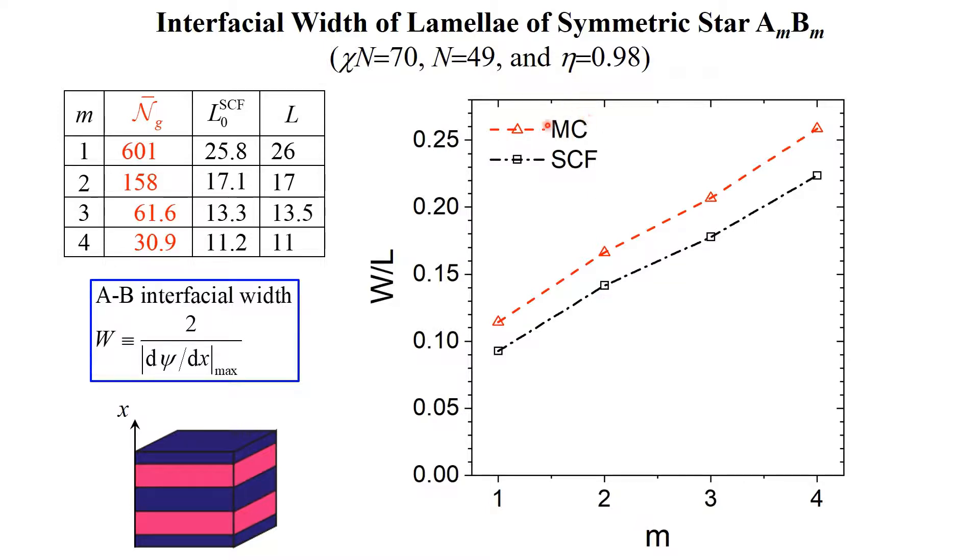W from Monte Carlo simulations is also larger than the self-consistent field result due to the broadening of A-B interfaces by capillary wave fluctuations. The difference delta-W also increases with increasing m, which is mainly due to the increased system fluctuations caused by the smaller n-bar-g.